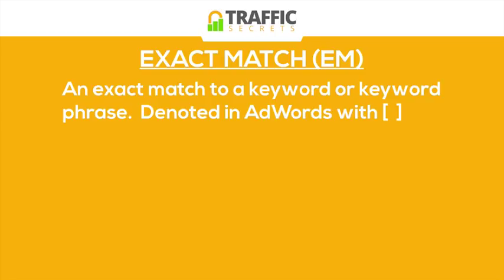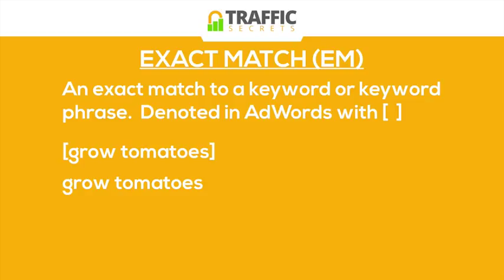An exact match is denoted in AdWords with brackets. So if you set up an ad group and in the keyword listing you would type [grow tomatoes] — if grow tomatoes was the exact match. What this means is that phrase is the only phrase that would trigger the ad to be shown. So if someone types in grow tomatoes, the ad is displayed. But if someone types in 'how to grow tomatoes,' 'grow big tomatoes,' or any other variation, the ad will not be shown. The ad will only be shown to someone that types in exactly what's in between those brackets.